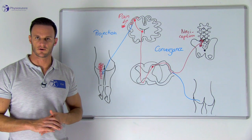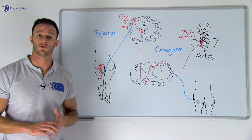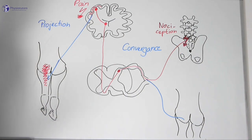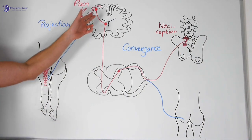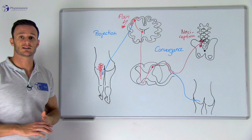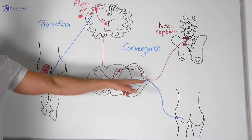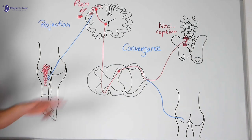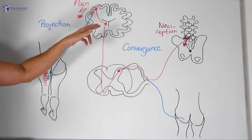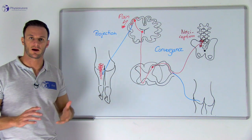In case of somatic referred pain, nociceptive input from axial or proximal somatic tissue — for example the left facet joint of L5-S1 — is projected as pain to a different, more distal somatic tissue like the left buttock and back of the thigh. This is due to the fact that nociceptive afferents of both tissues enter the spinal cord at the same spinal segment. The somatosensory cortex then projects pain into the area with the denser nociceptive afferent innervation — in this case the left buttock and the back of the thigh.